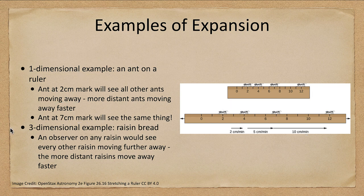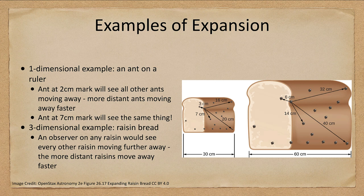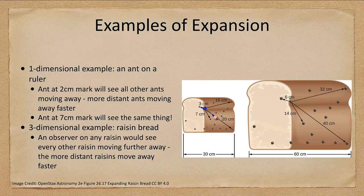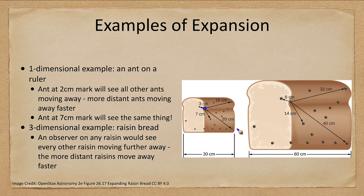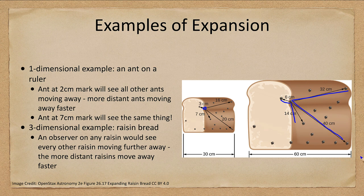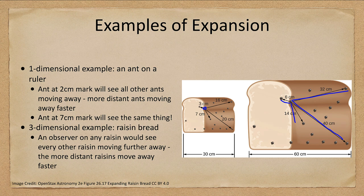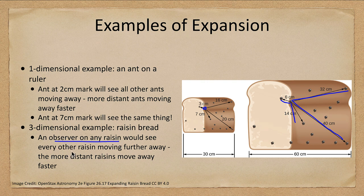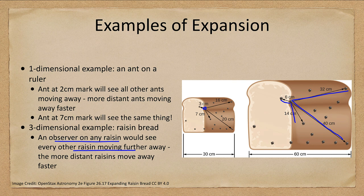Now we can look at a three dimensional example as well, and that would be a piece of raisin bread here. So if you start off with the uncooked dough here, the raisins are certain distances apart. And so we pick one raisin here with a raisin at three centimeters, one at seven, one at sixteen, and one at twenty. And if we look at this, then this one has gone to six centimeters, this one to fourteen, this one to thirty-two, and this one to forty centimeters. So they've all increased. And the ones that are further away are increasing at a faster rate. They have increased twenty centimeters. This one has gone from twenty centimeters to forty centimeters. This one went from only three centimeters to six centimeters. And again, it does not matter which one you see. An observer on any raisin would see every other raisin moving farther away, and the more distant ones moving faster.